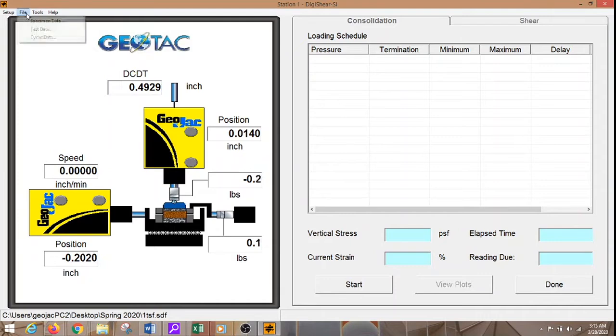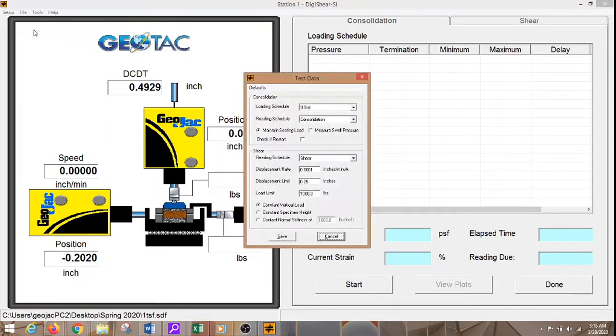Then we will go to the test data and specify 1 TSF. This is for consolidation and it seems OK. For shear we will be running this test for 0.025 displacement rate. And the displacement limit is OK at 0.25 inches. For the load limit as I said earlier will be 2,000 pounds. Everything seems good and we save.